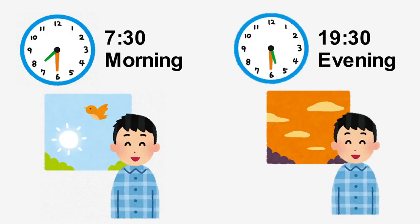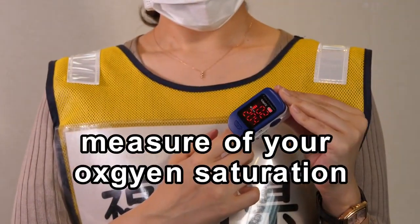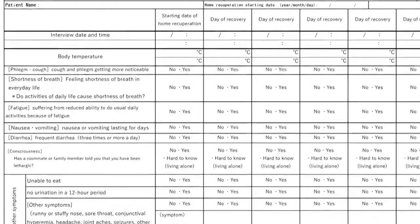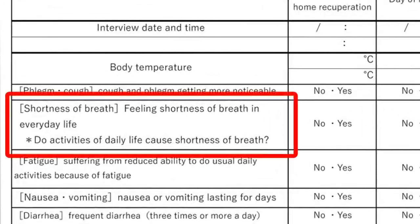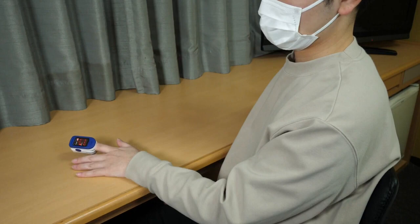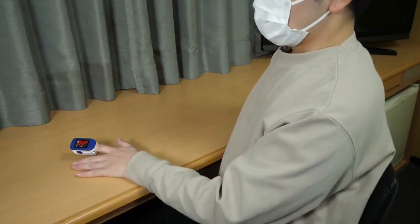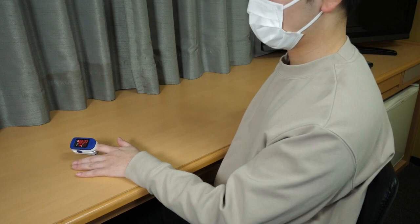At the time of the relevant announcement every morning and evening, measure your body temperature and oxygen saturation and write the numbers on the follow-up health check sheet. If you notice any changes in your respiratory symptoms, fill in the shortness of breath column. Nurses will check the numbers on the health check sheet every day. If you have any concerns, please take your temperature and measure your oxygen saturation by yourself.